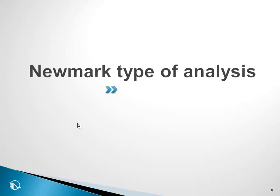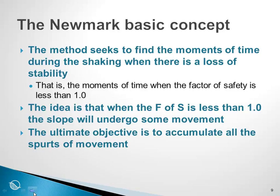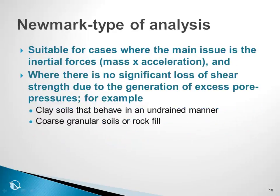One of the simpler types of earthquake analyses available in GeoStudio is what is known as a Newmark type of analysis. A Newmark type of analysis seeks to find the moments of time during the shaking when there is a loss of stability — that is to say, the moments of time when the factor of safety is less than 1. The idea is that when the factor of safety is less than 1, the slope will undergo some movement, and the ultimate objective is to accumulate all the spurts of movement. A Newmark type of analysis, however, has only limited application for specific situations.